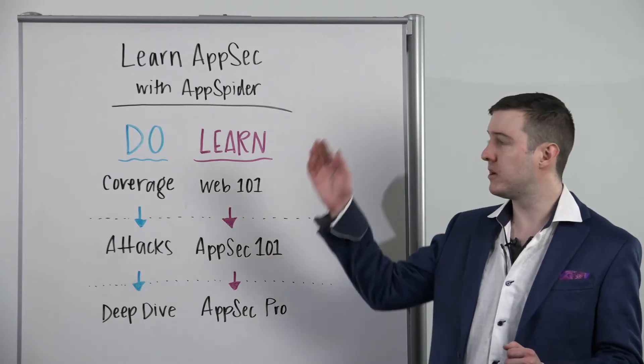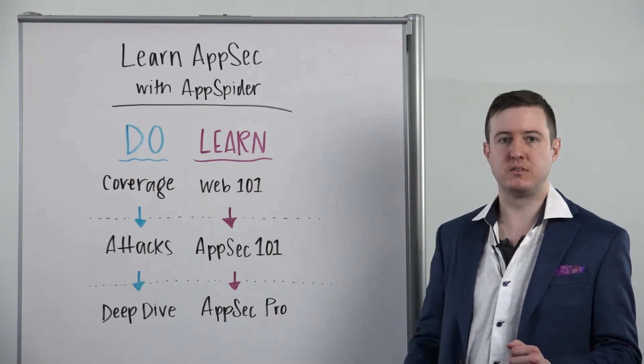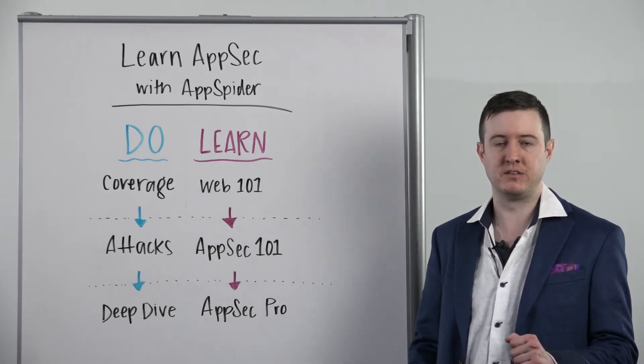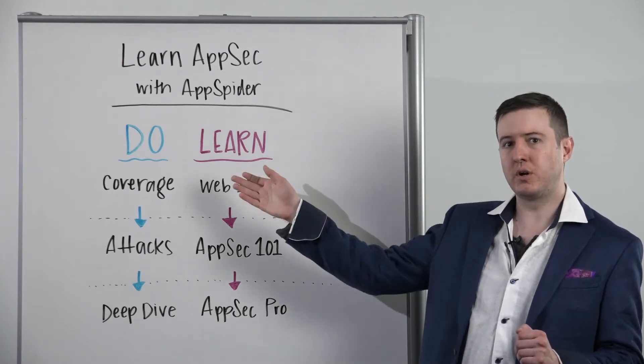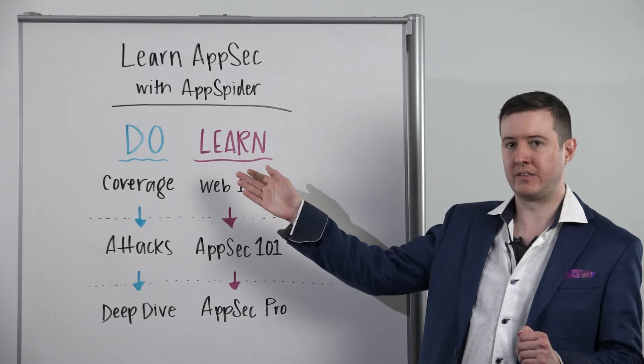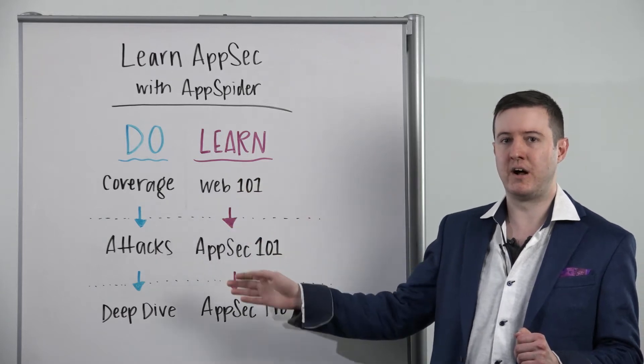Now, we're going to be talking a bit about AppSpider, Rapid7's DAST tool—that's Dynamic Application Security Testing, if you didn't catch the acronym there. When you're working with a Dynamic AppSec tool like that, there are three main phases that you're going to follow. The first one is coverage.